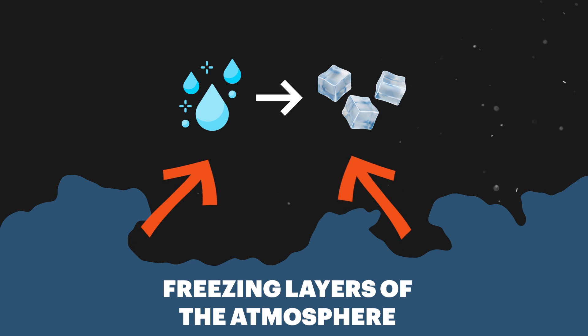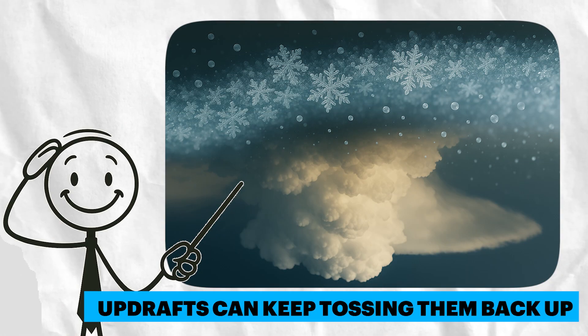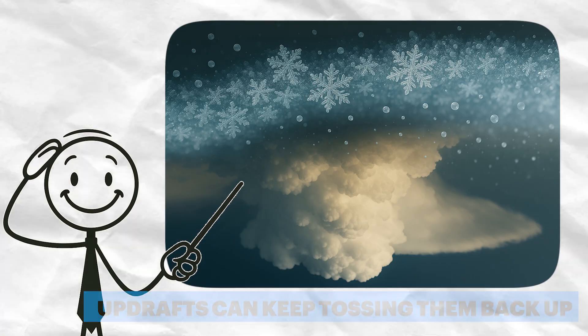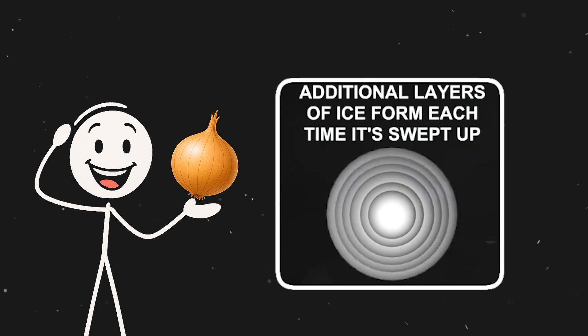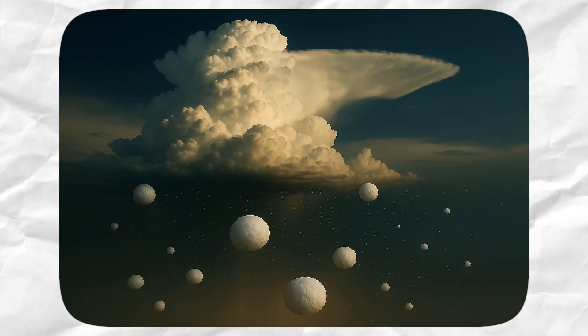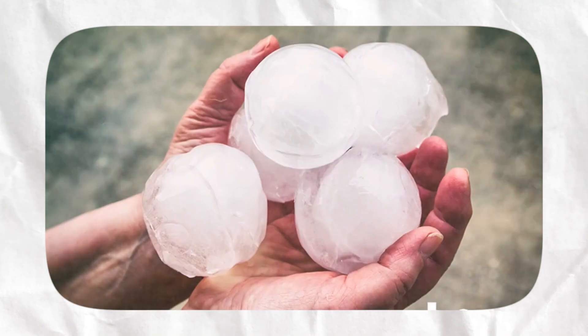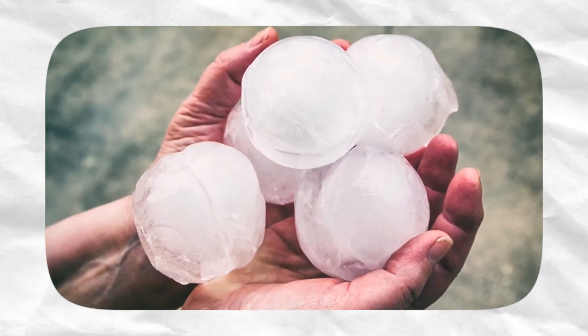Once those droplets hit the freezing zone, they become tiny ice pellets. But they don't fall right away. Updrafts can keep tossing them back up, adding more layers of ice every time. Think of it like a frozen onion, layer after layer. Eventually, they get too heavy for updrafts to hold. And just like that, they come crashing down as hailstones.